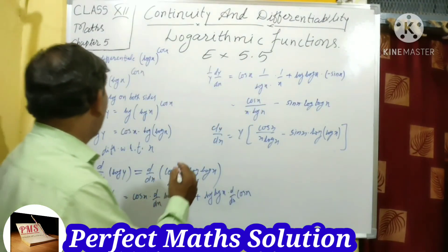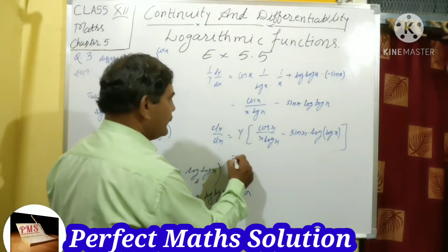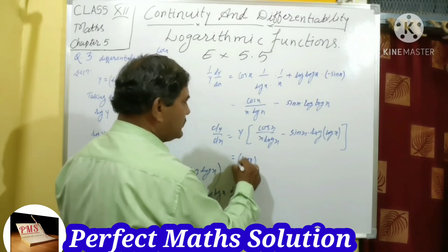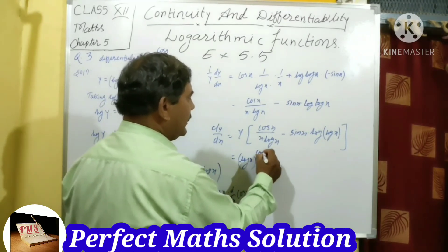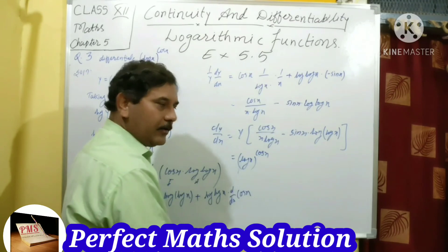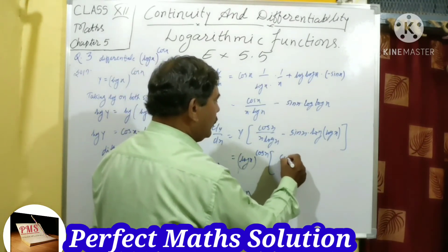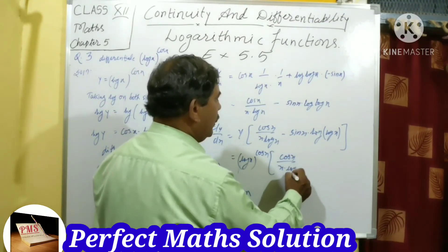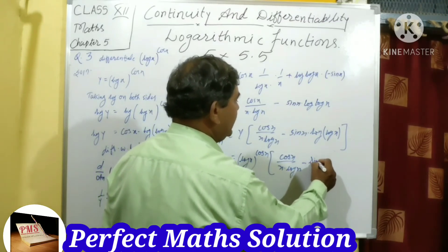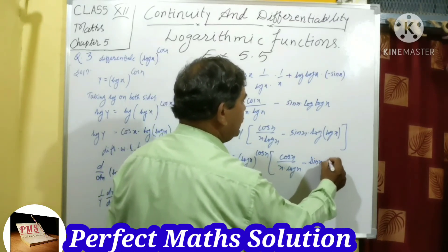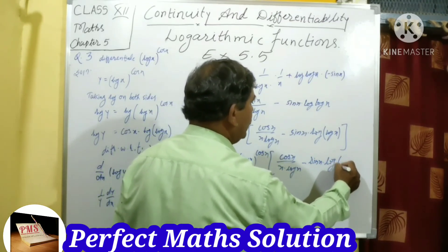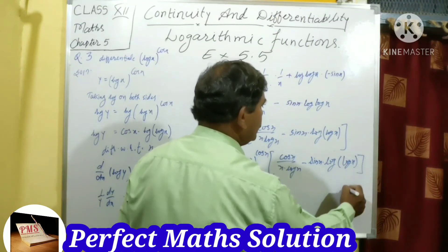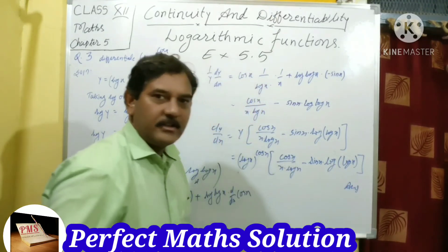Now substitute the value of y. y is equal to (log x)^cos x. So dy/dx equals (log x)^cos x · [cos x/(x·log x) − sin x·log(log x)]. This is the answer.